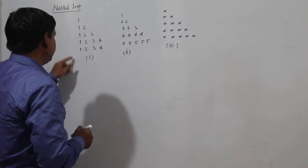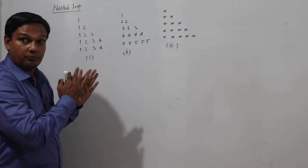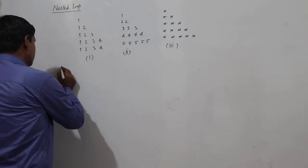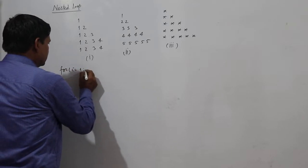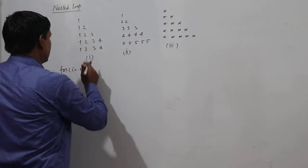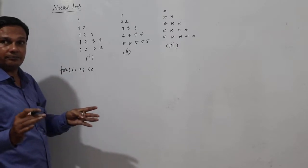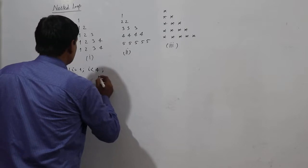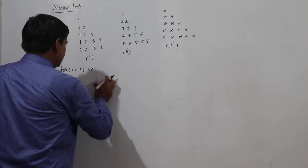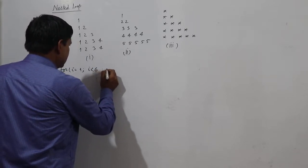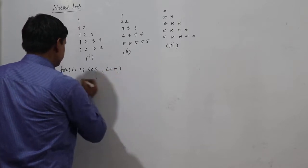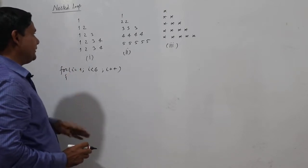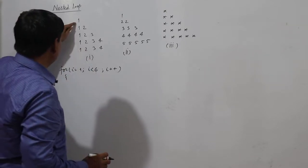It's starting from the very beginning. For i equal to one, i less than — how many rows are there? Five. I can also take the value of n from the user. i less than equal to five, less than six, i plus plus. How many rows are there? Five rows. In the first row, only one column is there.